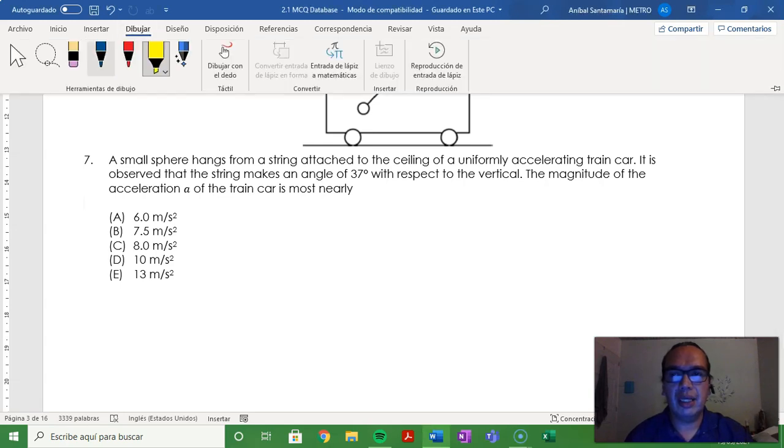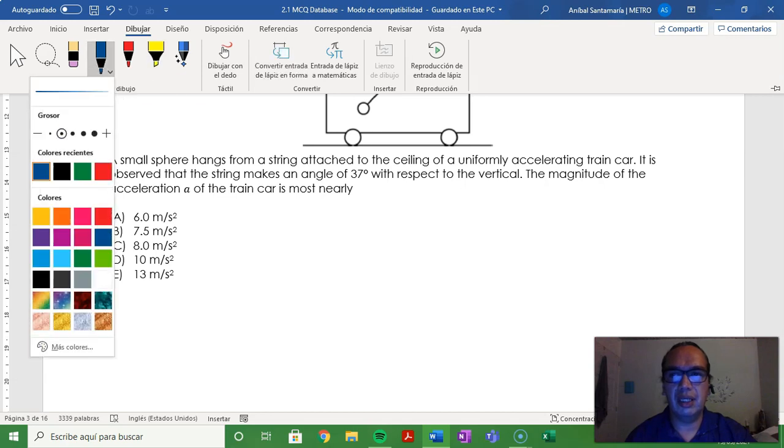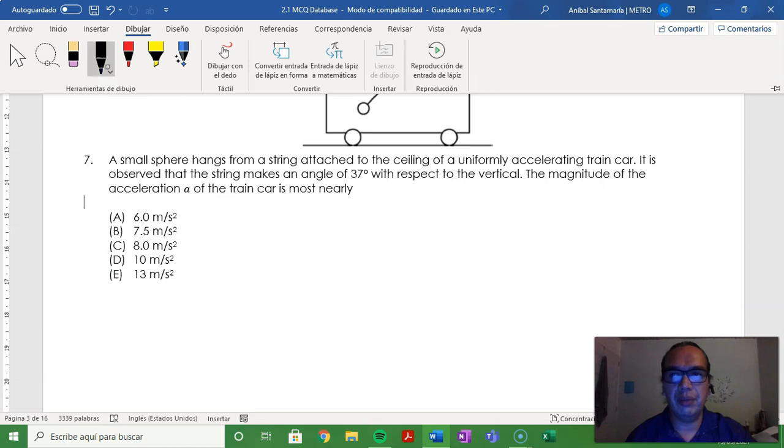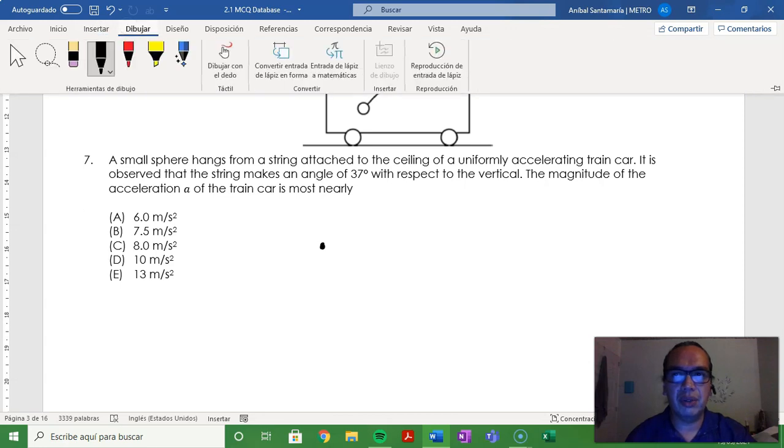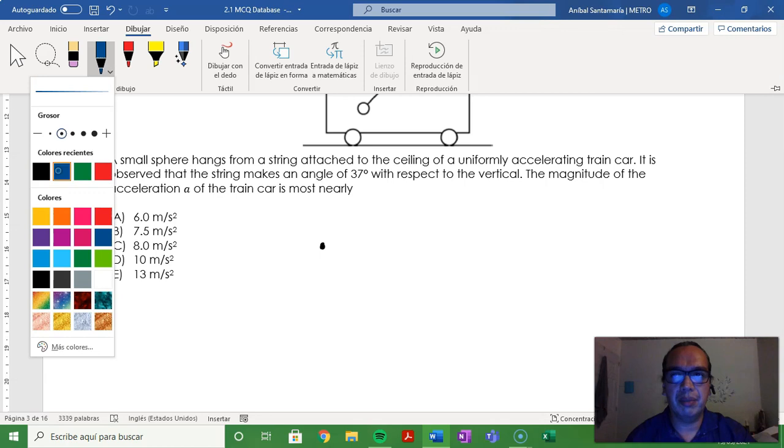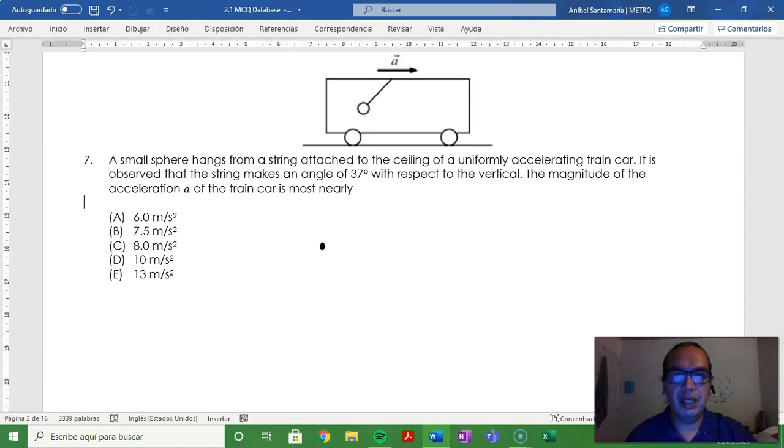Well, we can consider that this object is under a vertical equilibrium situation, but it is accelerating forward. If you think about the free body diagram for the forces acting here, you have a gravitational force mg and a tension T acting at 37 degrees relative to a vertical line.